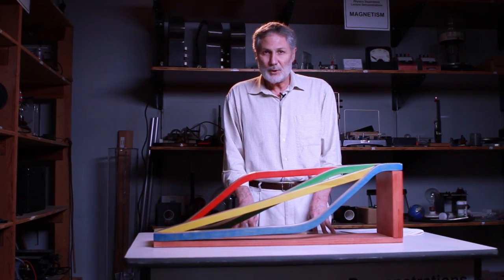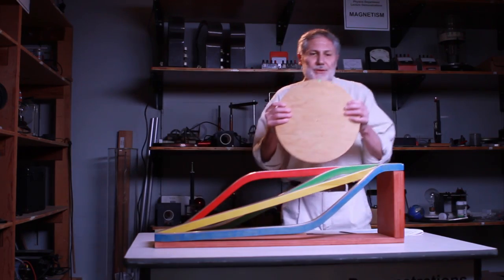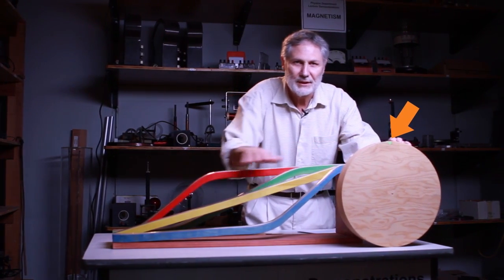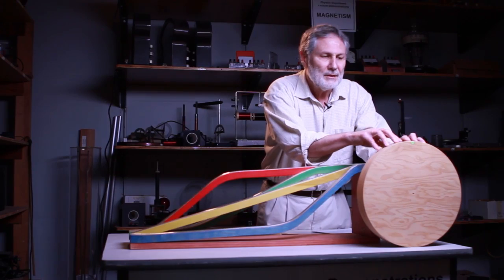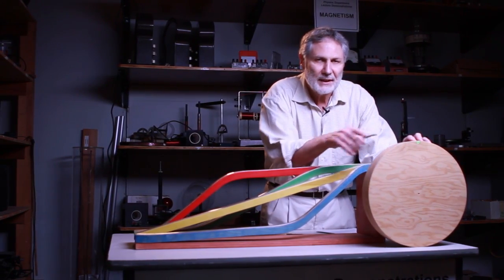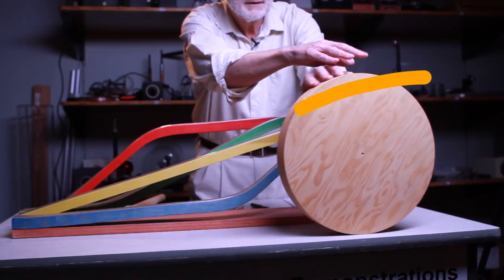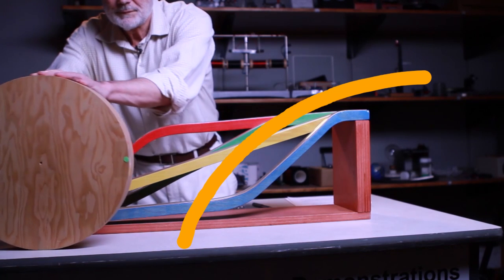This curve—we can generate this curve with a disc we have here. If you focus your attention on the green dot as I roll this disc straight along here, straight along the table, the point will trace out a cycloid. That's a cycloid.